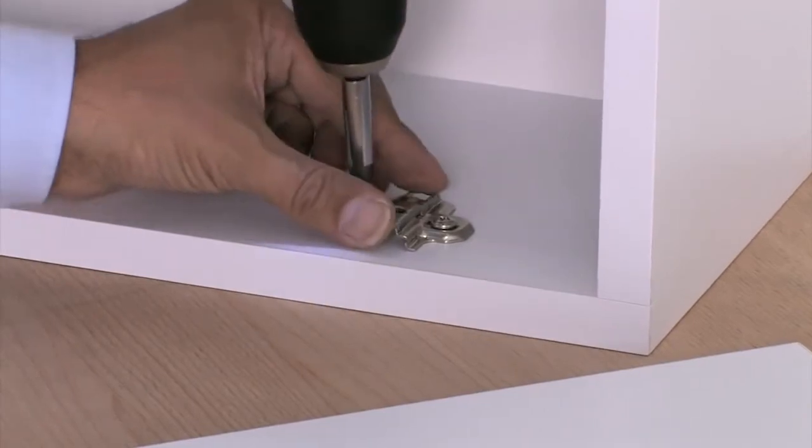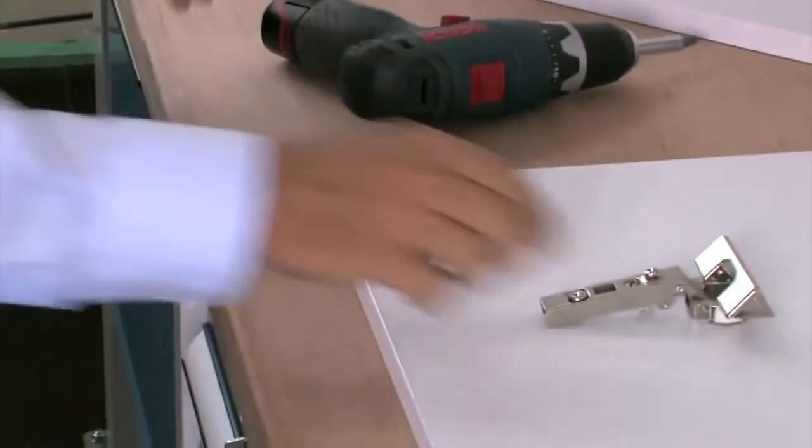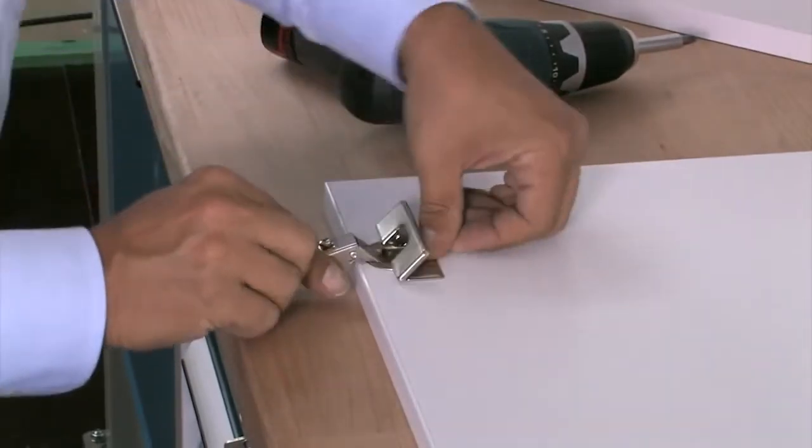Now screw the mounting plate to the inside of the carcass and press the hinge cups into the cup holes in the door.